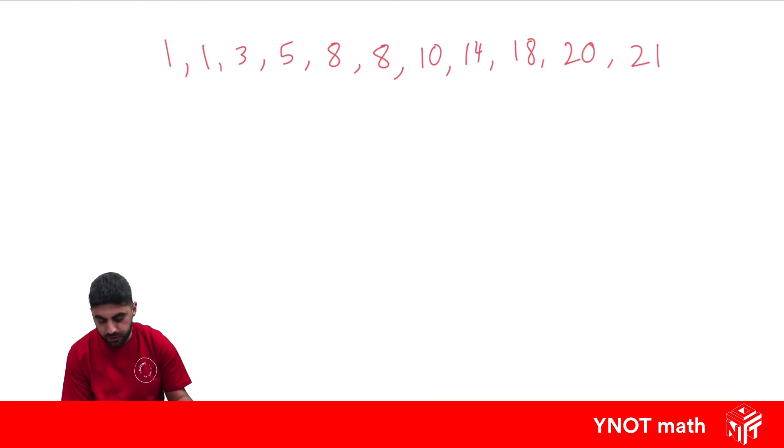Now, we should have 11 scores here, because we added on one extra one. And this time, there's going to be one score left in the middle, which is going to be this one. Because now we have five scores on this side, and five scores on this side. That's the only change that happens. We actually have a score in the middle this time.